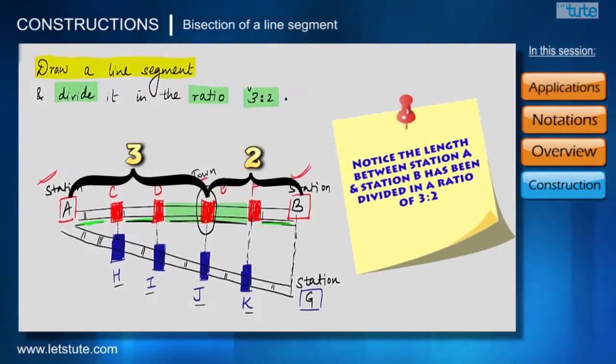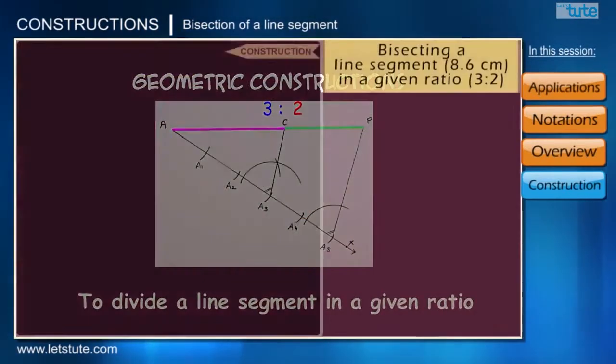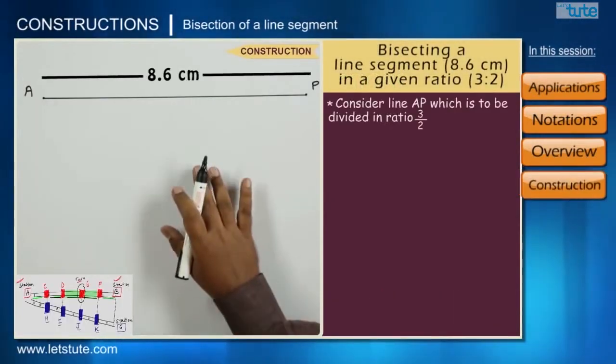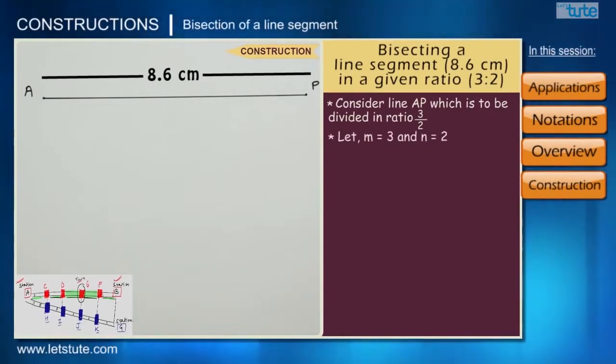So this was a rough idea as to how we go about this construction. Let us see how we really do it with the help of a compass and a straight edge. With the help of a ruler, draw a line segment AP of length 8.6 centimeters, which we will divide in a ratio of 3 is to 2.